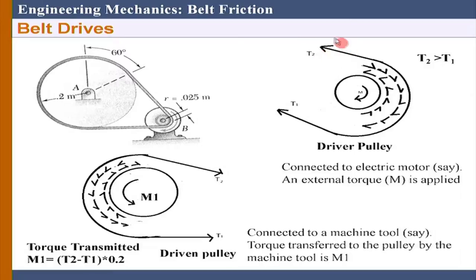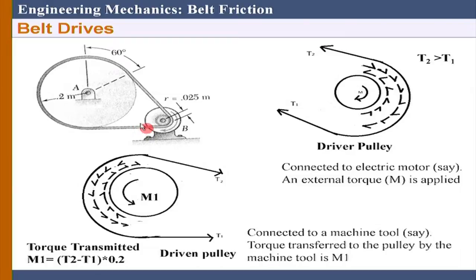So this side should have a greater tension - that means in this belt this side should have a greater tension. Now if you do not want to detach the belt from the body, it is also clear that T2 minus T1 multiplied by R should equal the moment applied. So there is a clockwise torque; to balance that I need an anti-clockwise torque. Therefore this side tension has to be greater than this side tension.